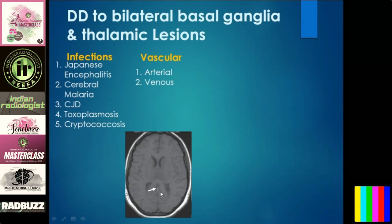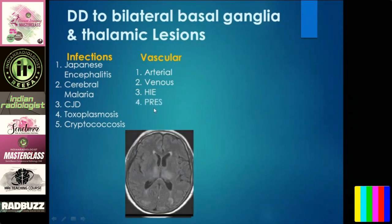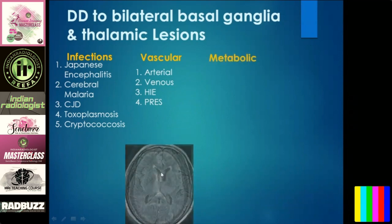Hypoxic etiology such as carbon monoxide poisoning or partial hanging commonly affects bilateral basal ganglia and thalamus — history plays a very important role. In postpartum cases, posterior reversible encephalopathy syndrome (PRES) commonly affects the parietal occipital regions including the thalamus.